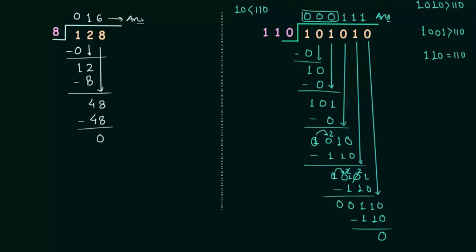Now we can definitely cross check our answer. 101010 is 42. You can easily find out the decimal equivalent of this binary number.